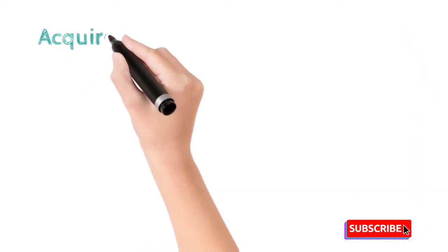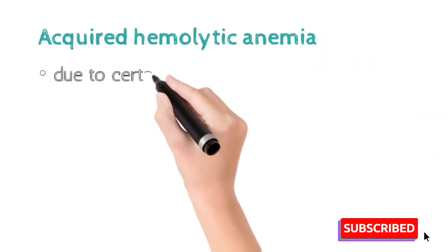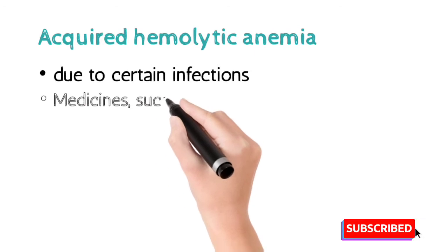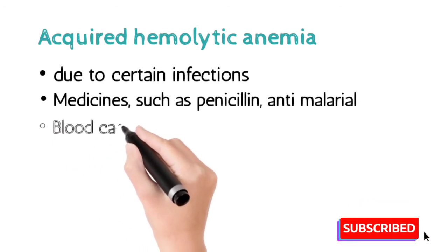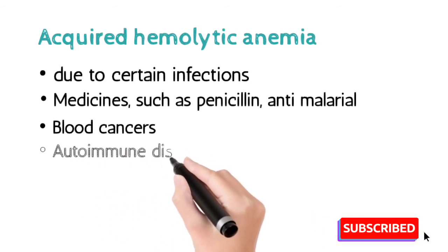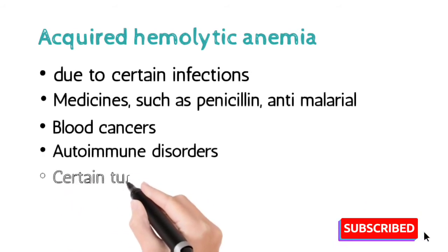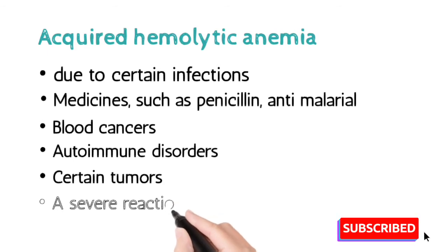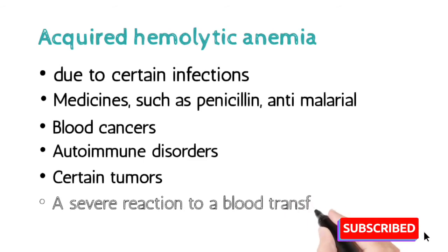Acquired hemolytic anemia is the condition due to external factors. It may be due to certain infections; medicines such as penicillin, antibiotics, and anti-malarial medicines; blood cancers; autoimmune disorders, during which the body starts destroying its own cells; certain tumors; and severe blood transfusion reactions. These are all conditions during which acquired hemolytic anemia occurs and causes RBC destruction.